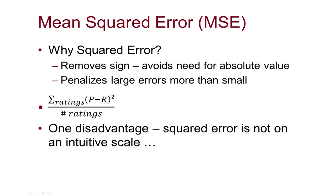Mean squared error, instead of taking the absolute value, squares the error. There are two reasons for this: one is that it's another way to get rid of the sign, since minus one and one squared have the same value. More importantly, it comes from a belief that large errors are more important than small errors — being off by two stars once is worse than being off by half a star four times.